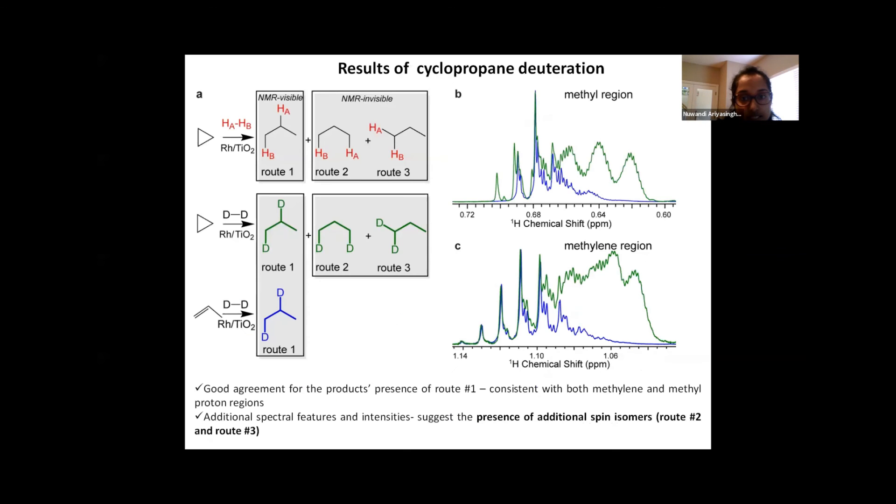The gas coming out here is collected into an HPLC column filled with deuterated methanol. And then we fill NMR tubes with the product and acquire spectra at 700 MHz Bruker NMR spectrometer. And those were the thermally polarized products. So what did we see? These are the product proton spectra of methyl and methylene regions. So the blue trace here represents the products obtained from propylene deuteration. And the green trace here represents the product obtained from cyclopropane deuteration. So if you compare the two spectra, you see there is a good overlap between the blue trace and some parts of the green trace, which suggests that there was a good agreement of the products presence from route number one, consistent with both methyl and methylene regions. But these additional spectral features and their high intensities indeed suggest the presence of additional stereoisomers, which we think can be attributed to route numbers two and number three.